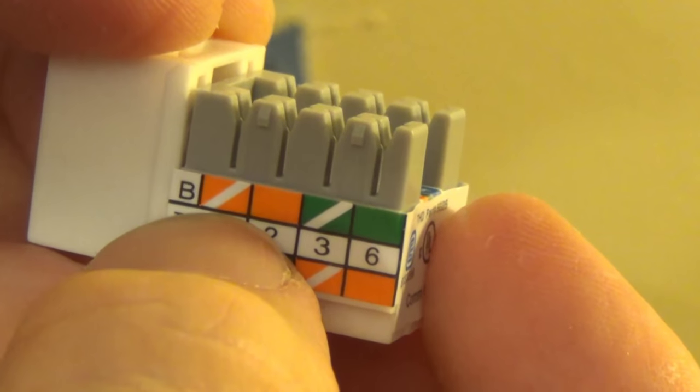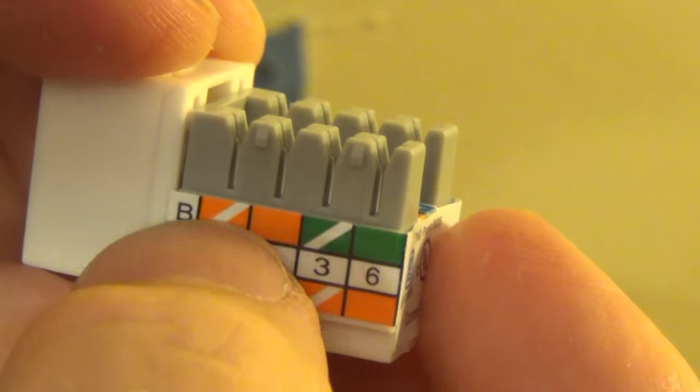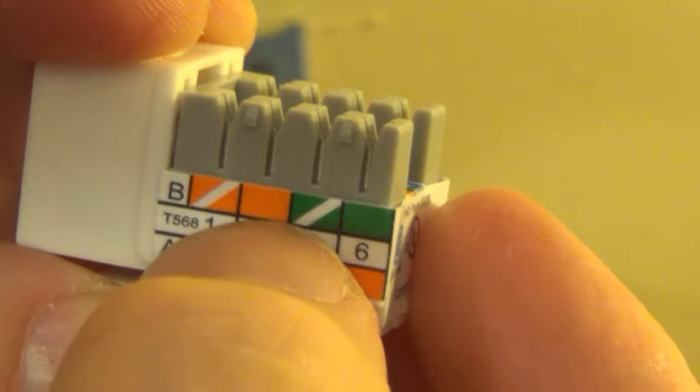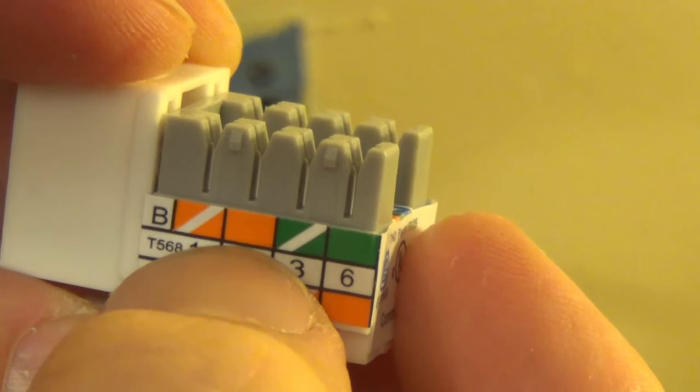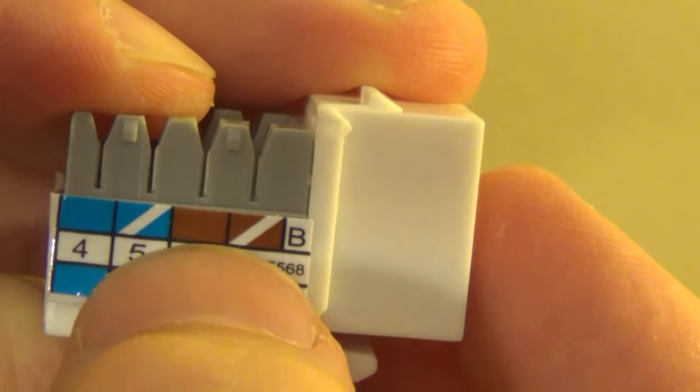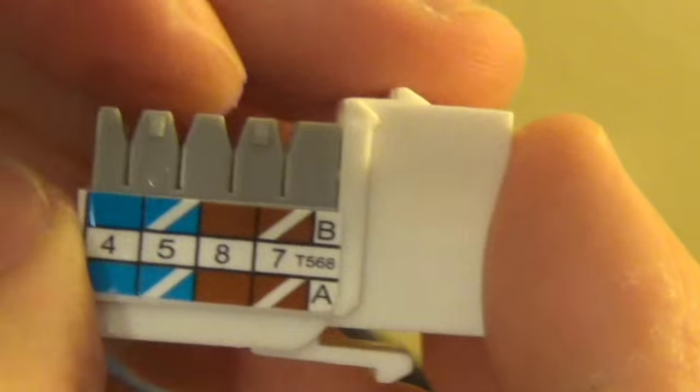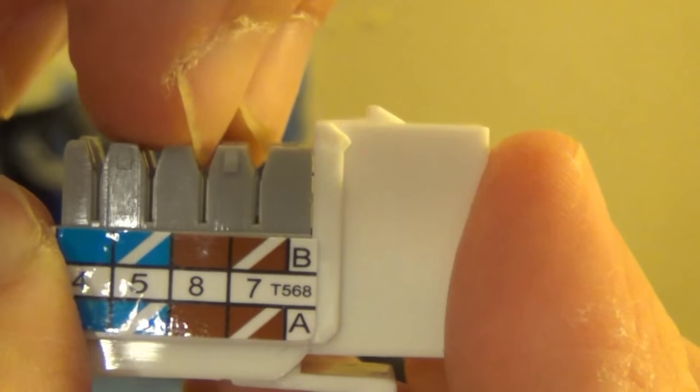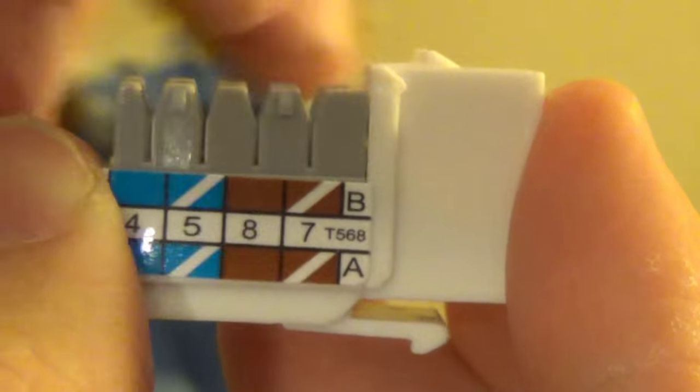So what you see is orange-orange stripe, or white stripe, but that represents basically the orange stripe. This is the wire with solid orange, green stripe, solid green, blue, blue stripe, brown, brown stripe. And the wires are actually going to go into these little slots here. And you'll see how I place them in just a sec.